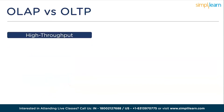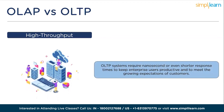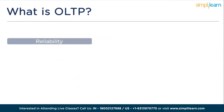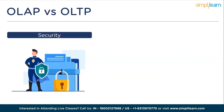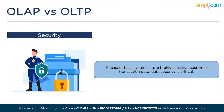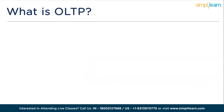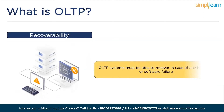Next is high throughput and short response time. OLTP systems require nanosecond or even shorter response times to keep enterprise users productive and meet the growing expectations of customers. Moving ahead, we have reliability. OLTP systems typically read and manipulate highly selective small amounts of data, and it is paramount that at any given time, the data in the database is reliable and trustworthy. Next is security — because these systems store highly sensitive customer transaction data, data security is critical, and any breach can be very costly. And lastly, recoverability: OLTP systems must be able to recover in case of any hardware or software failure.